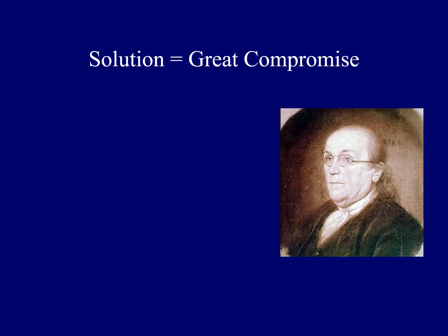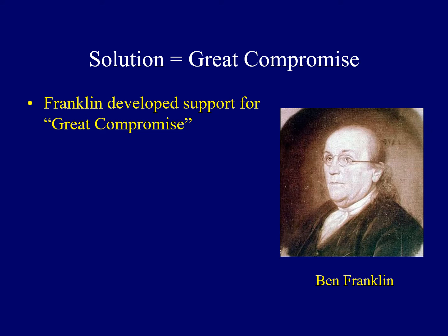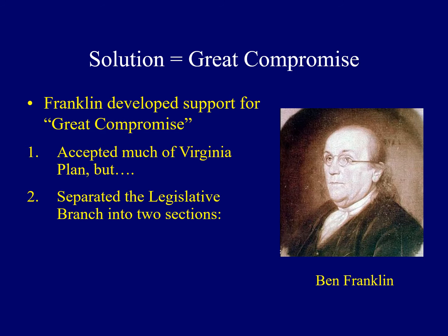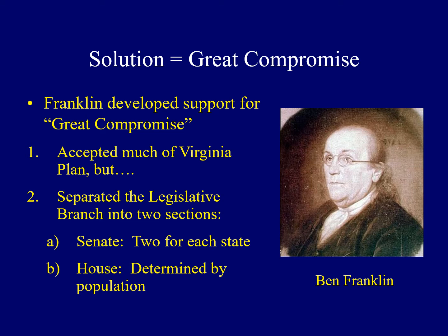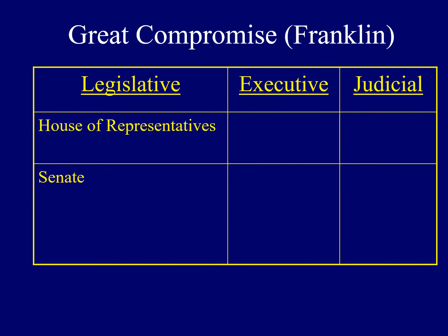Finally, cooler heads prevailed when the oldest delegate, Benjamin Franklin, developed support for what came to be known as the Great Compromise. It accepted much of Madison's Virginia Plan but had a key distinction: it separated the legislative branch into two different chambers. The upper chamber would be the Senate, where every state would be treated equally with two senators each. In the House of Representatives, the number of members would be determined by each state's population. This struck a balance — big states liked the House, small states liked the Senate. The legislative branch was thus divided into the House and Senate.